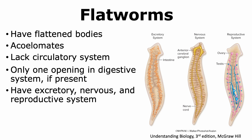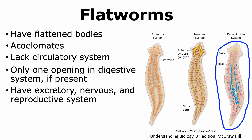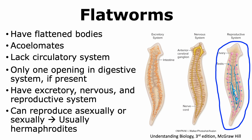Even though flatworms lack a circulatory system and in some cases a digestive system, they do have other systems such as an excretory system, a nervous system, and a reproductive system. Flatworms can reproduce asexually or sexually, and in many cases they tend to be hermaphrodites, having both male and female reproductive organs.